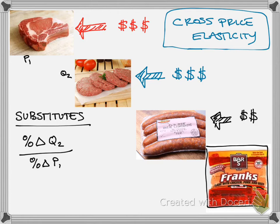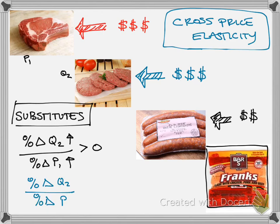All right, so if the price goes up and then you buy more of good two, this is positive. We call that substitutes. Now the other option is that the percentage change in quantity of good two for a percentage change in price of good one. If price goes up and quantity goes down, that would mean we are negative and we call those complements.